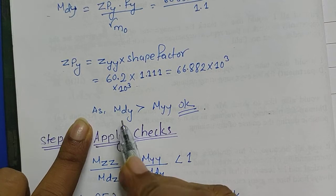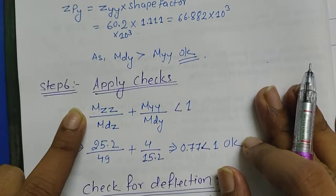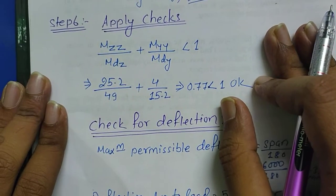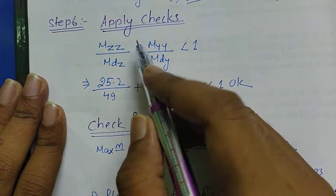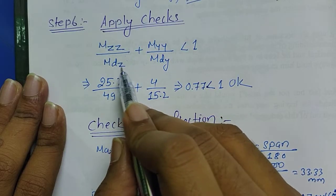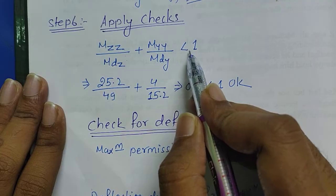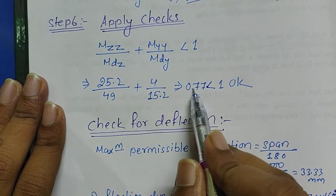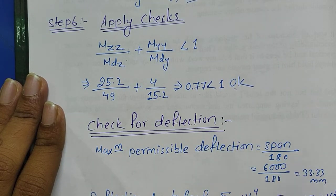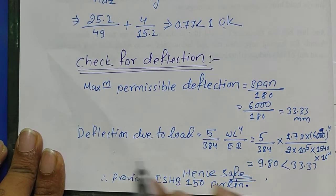I have calculated ZPY and put that value here and got the value MDZ and MDY. Now MDY is less than MYY, hence the section is okay. Now we have to apply final checks. Final checks consist of two checks. First is check for MDZ by MDY. MZZ by MDZ plus MYY by MDY is less than 1. As it is true, hence our section is right.